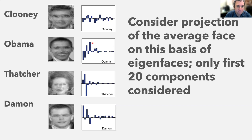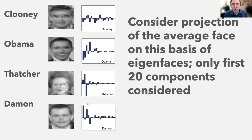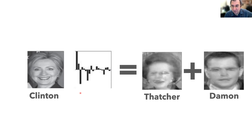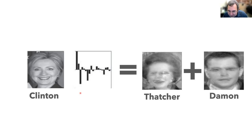That's George Clooney represented as a vector. Then average Obama, average Thatcher, and average Damon. Notably, Thatcher has a large negative peak in the third component, while Damon has a large positive peak in the first. The point is that you don't have to pick one of these celebrities — you could take anyone's image and represent it in this space. For example, Hillary Clinton has a very large first component and large third component, so in some sense she's like a Thatcher plus a Damon. High-dimensional image data can be turned into a point in a high-dimensional space and analyzed with the same tools.